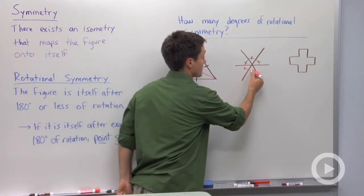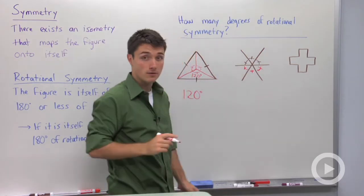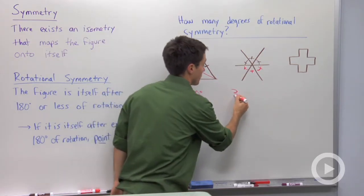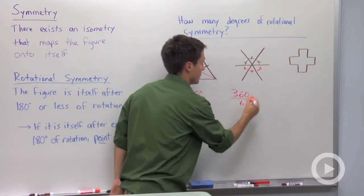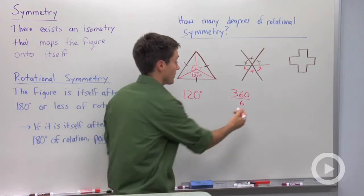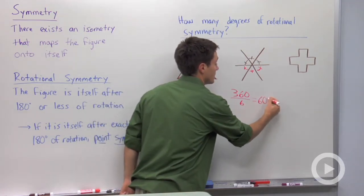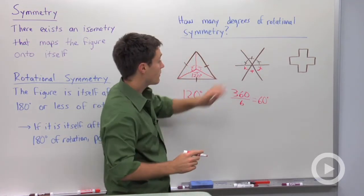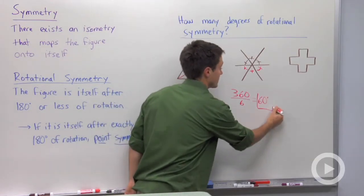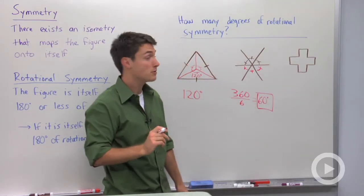Well, since there are six congruent angles, we're going to have to do 360 divided by 6. Well, 360 divided by 6 is 60 degrees. So this figure right here has 60 degrees of rotational symmetry.